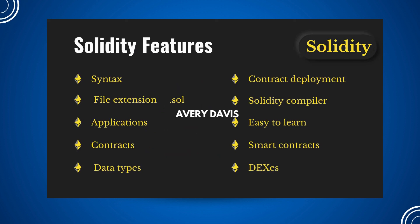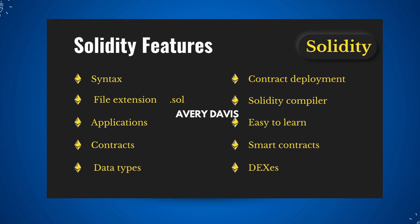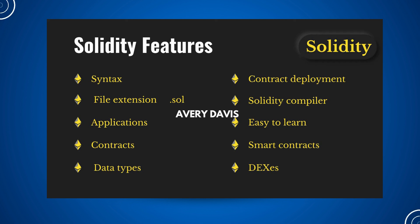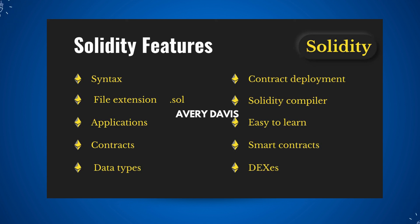Now let's talk about some important features of Solidity — why we should use it, how it helps us, and what kind of programs we can build. First, syntax: if you've coded in JavaScript, you'll find the same infrastructure, pattern, and syntax when writing Solidity smart contracts. Second, file extension: every programming language has its own extension — Python, JavaScript, C++ all have their own — and Solidity has its own extension too: dot sol (.sol).